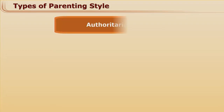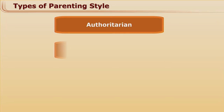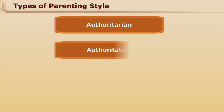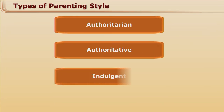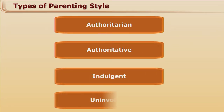Let's see what those are. First is authoritarian, next is authoritative, third is indulgent, and fourth is uninvolved.